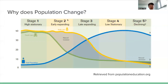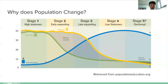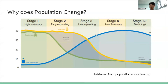In stage two, the early expanding period, the death rate decreases as there are advancements in medical technology as the country starts to develop, which decreases infant mortality and increases life expectancy. But change doesn't happen rapidly, so the birth rate remains constant at a high rate, and the total population starts to grow. In stage three, the late expanding period, the birth rate starts to decrease as there is emancipation of women and the cost of living increases as the economy develops significantly. Stage four is the low stationary period when the birth rate and death rate are equal but both low, so population growth starts to curve into a stationary position, though much higher than in stage one.